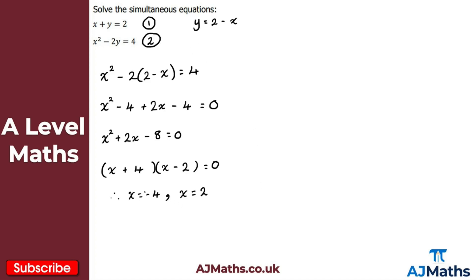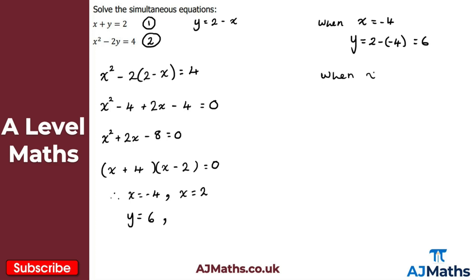Now I need the respective y solutions. I'll substitute these x values into the rearranged form y equals two minus x. When x equals minus four, y equals two minus (minus four), which is two plus four, giving y equals six. When x equals two, y equals two minus two, giving y equals zero. So our solutions are x equals minus four, y equals six and x equals two, y equals zero.